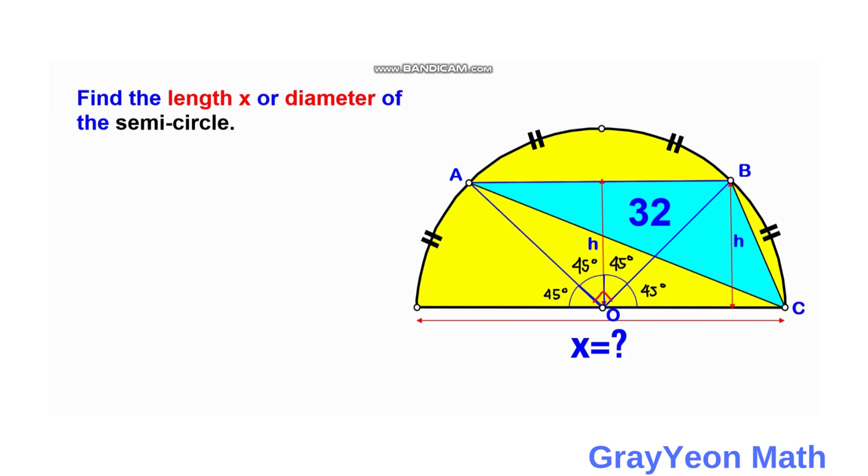Now we consider this length AO, which is actually a radius of this semicircle. Focusing on the area of triangle AOB, we have: area of AOB equals one-half times the base, which is R times R. The area of AOB is given to be 32, so 32 equals one-half times R squared. Cross multiplying, R squared equals 64, so R equals 8 units.